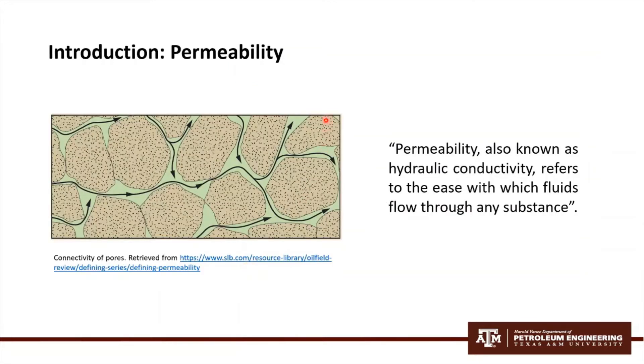So let's begin. We're going to first define what is permeability. Permeability, also known as hydraulic conductivity, refers to the ease with which fluids flow through any substance. There are two main types of permeability: absolute and effective.